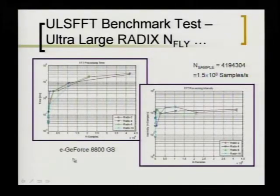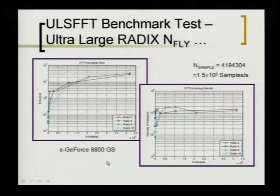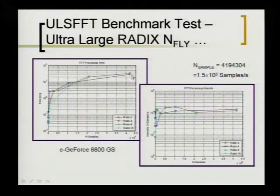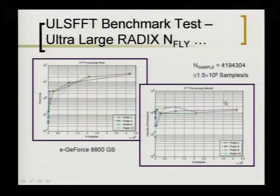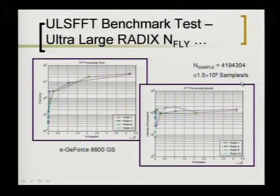Here's an experiment using an NVIDIA GeForce GPU — this is the 8800GS, which uses the G80 GPU. In this experiment, I'm simply benchmarking the CUFFT library, all the way up to around 4.25 to 4.3 million samples. I express those results in terms of processing intensity, which is number of samples per second. What I'm achieving here is about 1.5 times 10 to the 8 samples per second — on a GPU that costs about 50 bucks that you can go out and buy today.